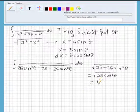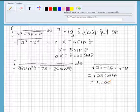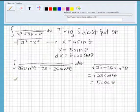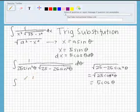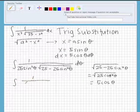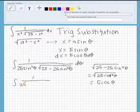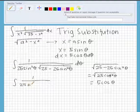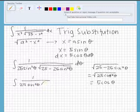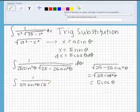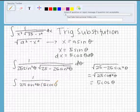So when we plug all of this back in, we get the integral of 1 over 25 sine squared theta times 5 cosine theta.